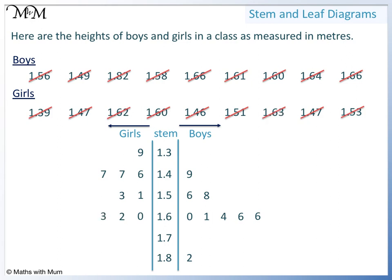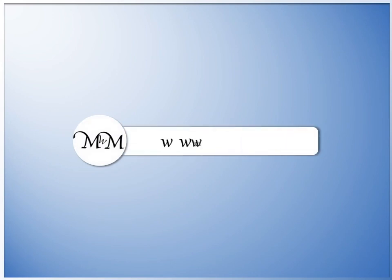We have finished our diagram, so we make a key to explain it. We pick any example, such as 1.5 slash 6 equals 1.56 metres. Thank you for watching. Visit MathsWithMum.com for further lessons, worksheets, and more.